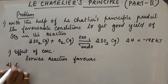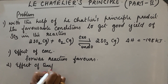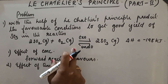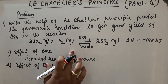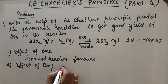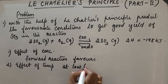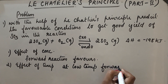Second case — effect of temperature. The forward reaction is exothermic and the backward reaction is endothermic. As the temperature is increased, the endothermic reaction is favored, so the backward reaction favors. In order to get better yield of more product, we have to decrease the temperature. At low temperature, the forward reaction is favored.